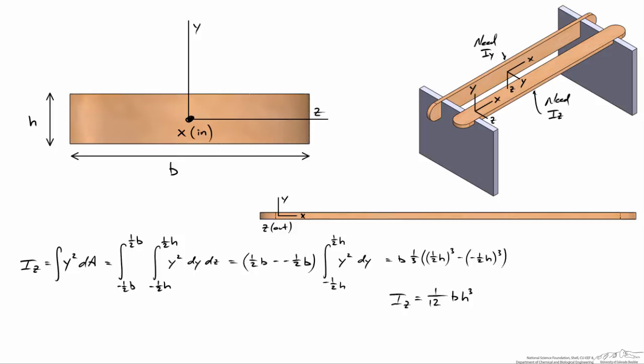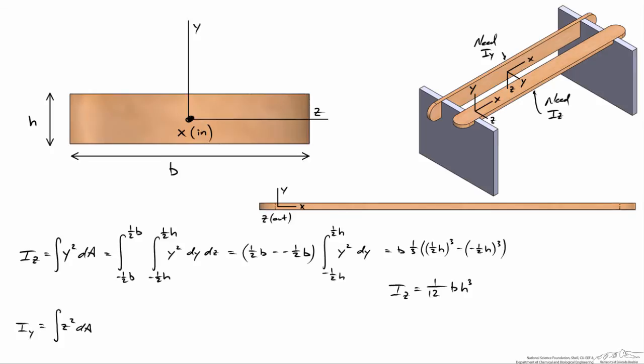If we wanted to consider the vertical popsicle stick, all the math is exactly the same, except now we're bending about the y axis. And instead of evaluating the integral y squared dA, we'll evaluate the integral z squared dA, which comes out to be one twelfth h b cubed, instead of one twelfth b h cubed.